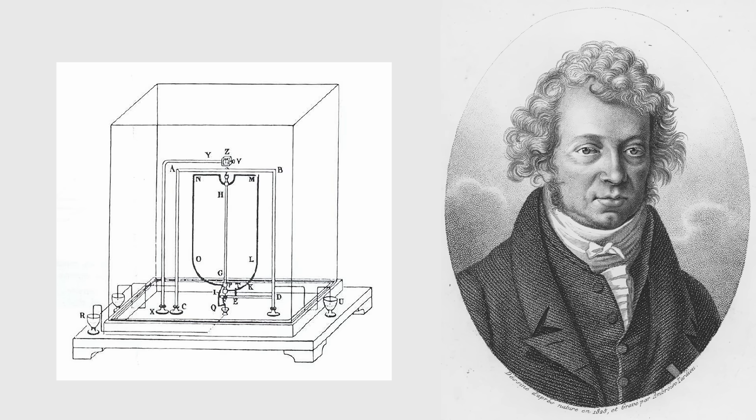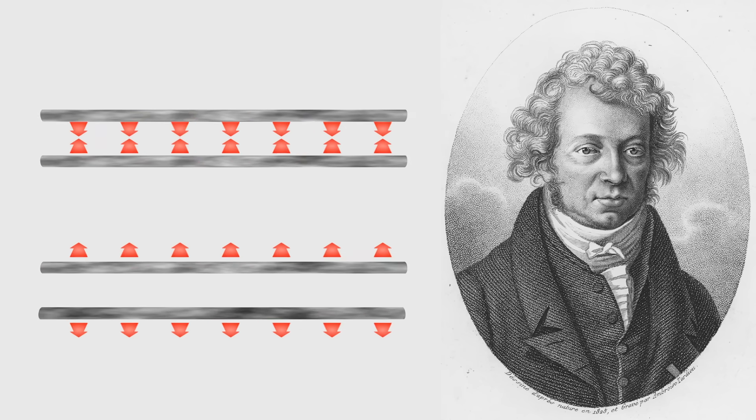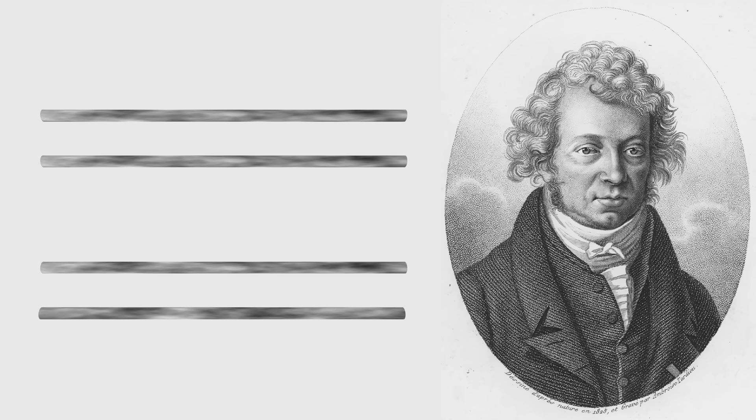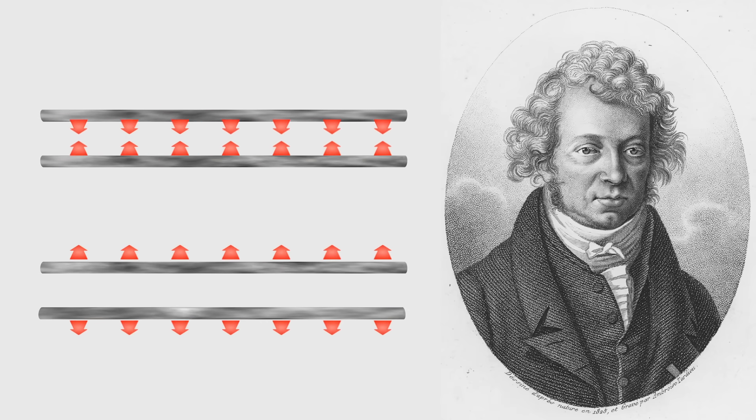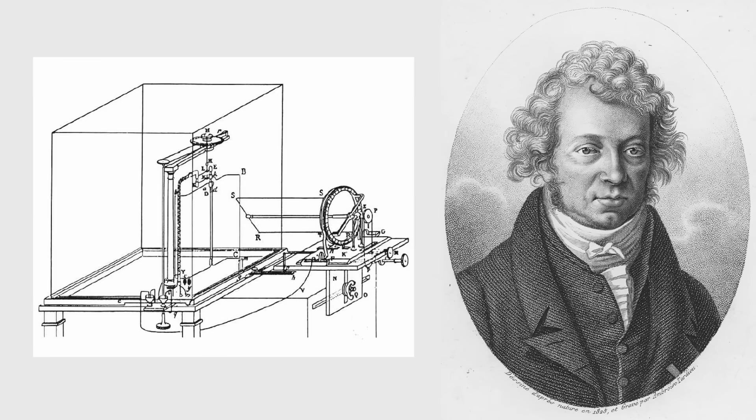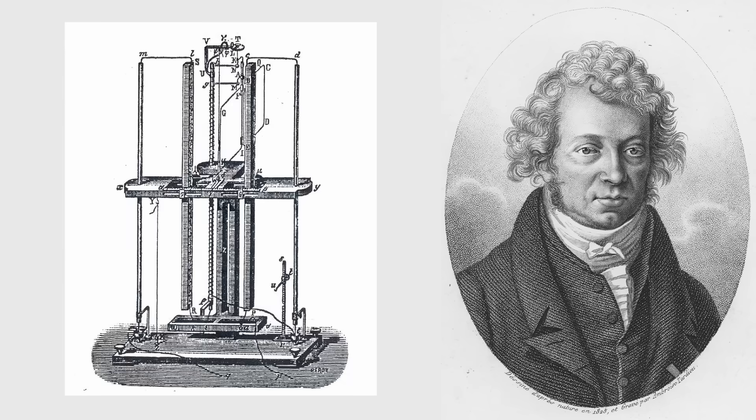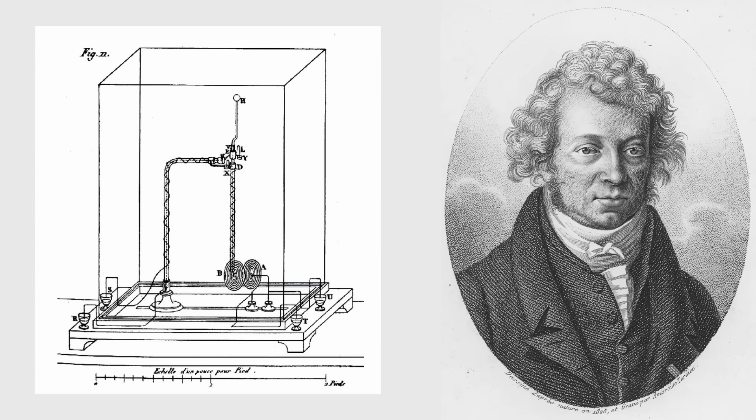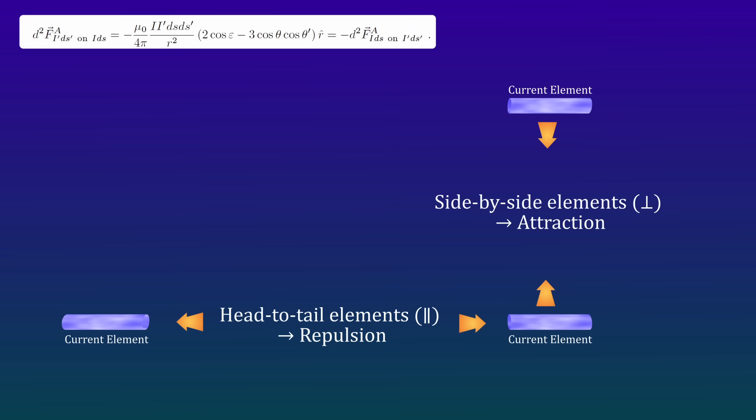News of Ørsted's experiments spread quickly across Europe. In Paris, André-Marie Ampère immediately set to work. Ørsted had shown that electricity could create magnetism. But how exactly did currents exert forces on each other? Could it be measured? Could it be described? Within weeks of hearing Ørsted's results, Ampère stood before the French Academy and demonstrated that two parallel currents attracted each other and currents in opposite directions repel.